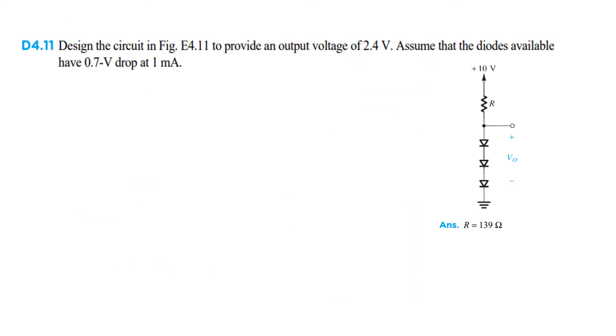The question was already discussed. Design a circuit to provide output voltage of 2.4 volt, and assume that the diodes available have 0.7 volt drop at 1 milliampere. So to get 2.4 volt, each diode must drop 2.4 divided by 3, that means 0.8 volt.